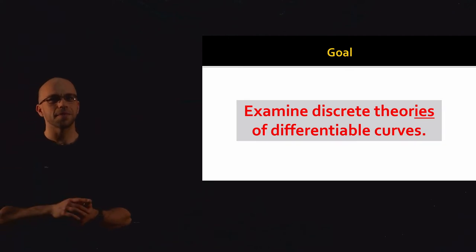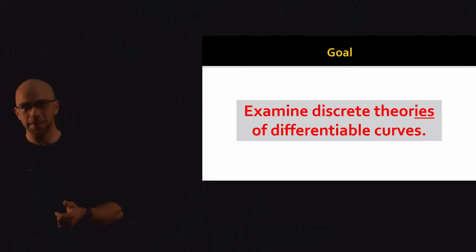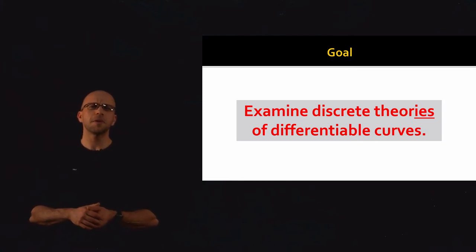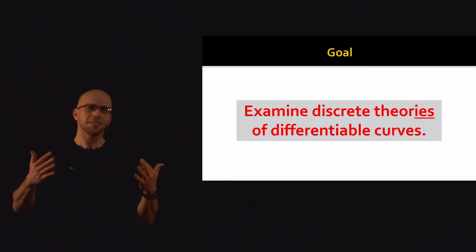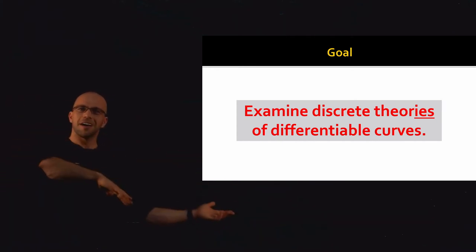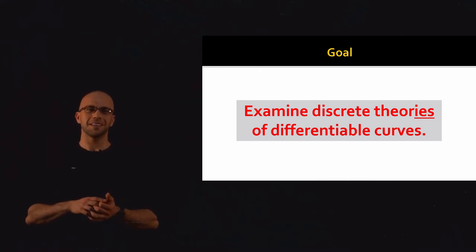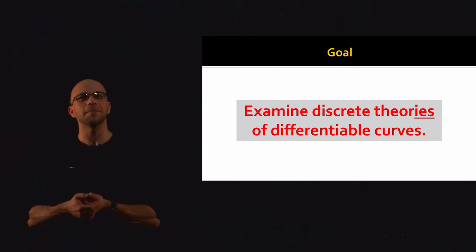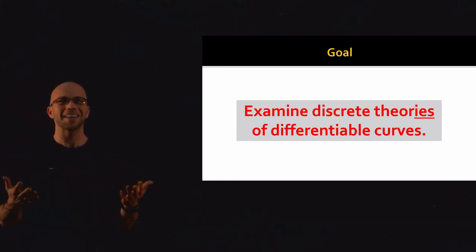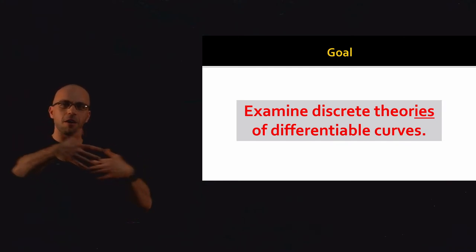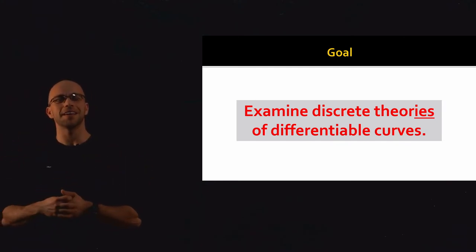Our goal today is to examine discrete theories of differentiable curves. This sounds like a total contradiction in terms — we shouldn't be able to have discrete theories of derivatives. Yet by designing curvature and other notions very carefully, we can come up with analogs of our previous computations that preserve some of the nice smooth global structure. Because of the no free lunch property, there are many different options for making smooth curvature work on a discrete object, all reasonable and all convergent, but looking different in the discrete regime.